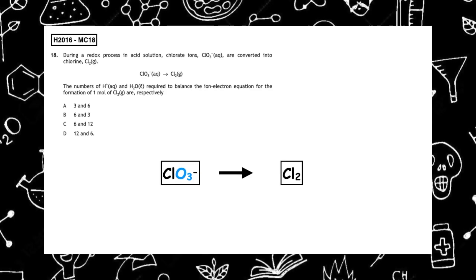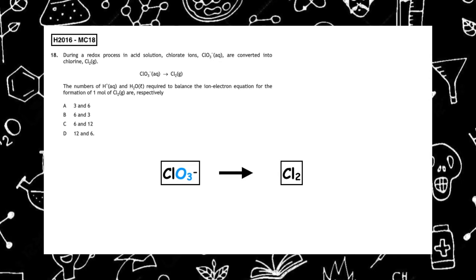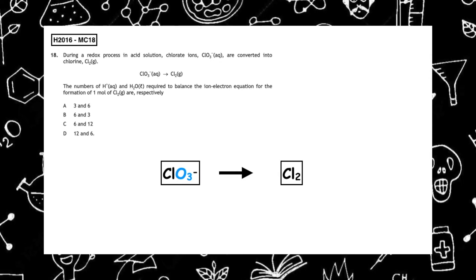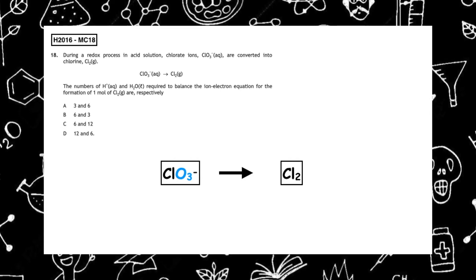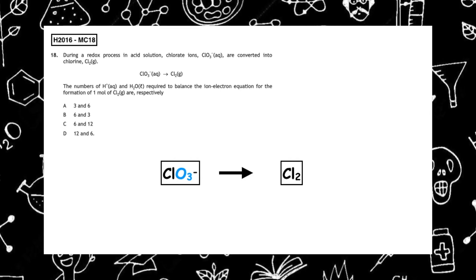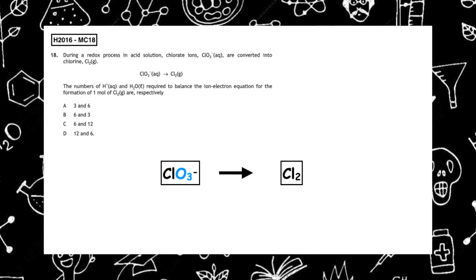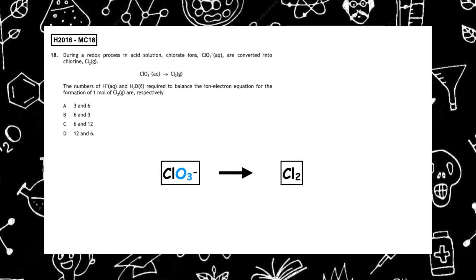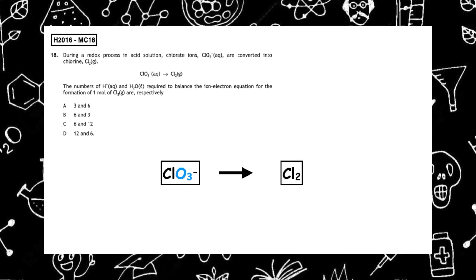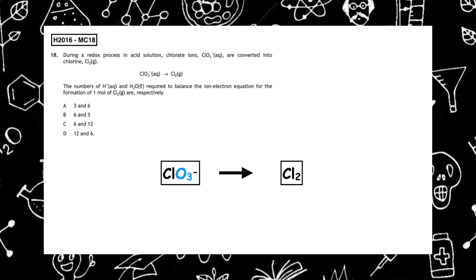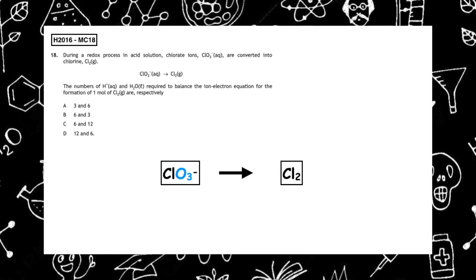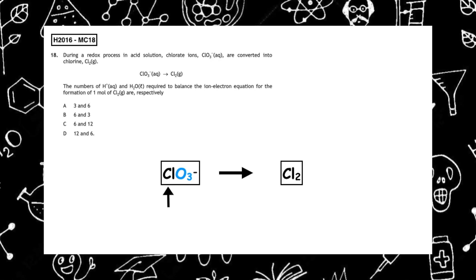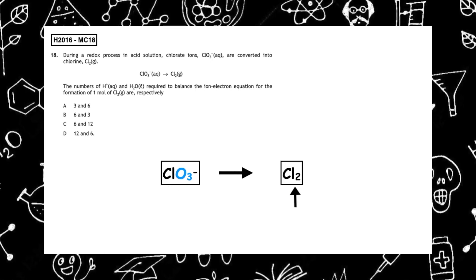This past paper question is from the Higher 2016 multiple choice question 18. During a redox process in acid solution, chlorate ions ClO3⁻ are converted into chlorine Cl2. The number of H⁺ and H2O required to balance the ion-electron equation for the formation of one mole of Cl2 are, respectively: we firstly balance all elements not hydrogen or oxygen. On the left we've got one chlorine, on the right we've got two, so I need to put a big two in front of the ClO3⁻.